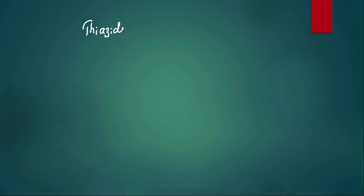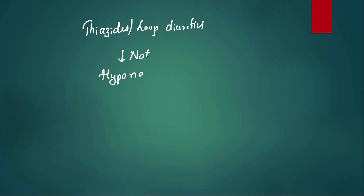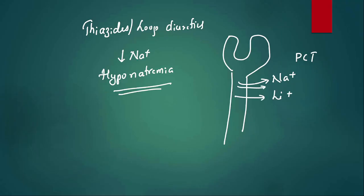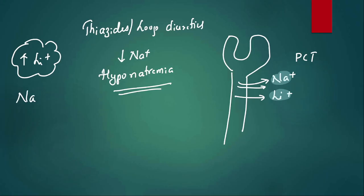Thiazides are diuretics known to produce hyponatremia — they decrease sodium in the circulation. When hyponatremia occurs, the kidney tries to reabsorb more sodium in the PCT. Since the body handles lithium similarly to sodium, lithium is also reabsorbed, causing increased lithium levels.